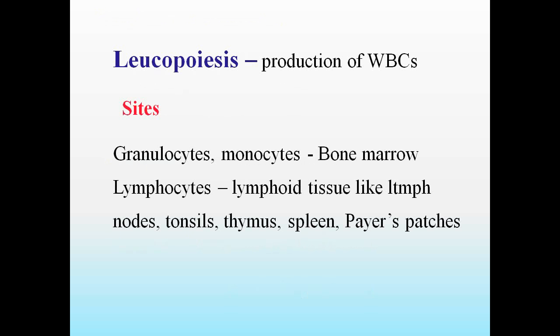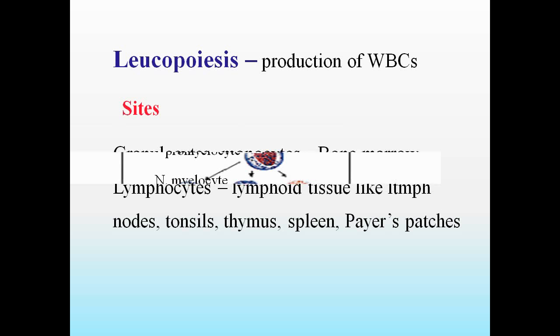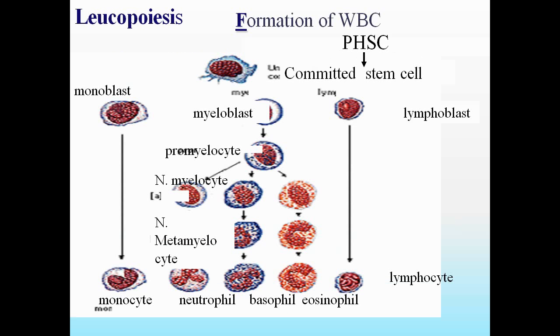Leukopoiesis — that is production of WBCs: granulocytes and monocytes are formed in bone marrow, while lymphocytes are formed in lymphoid tissue like lymph nodes, tonsils, thymus, spleen, and Peyer's patches. These are the different sites of production of WBCs. A schematic diagram showing the phases of leukopoiesis will be covered in the third part of this video.